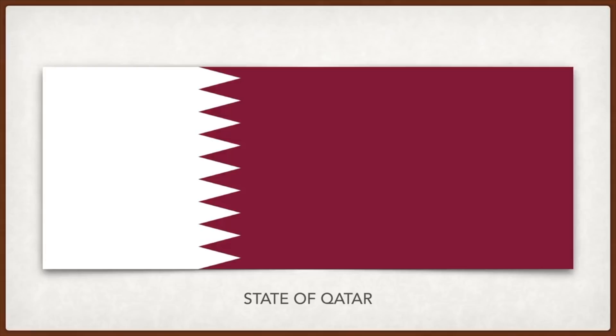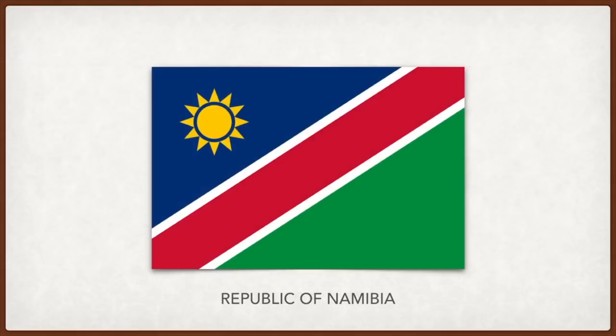Namibia: red is for the heroism of the people and their determination to build a future of equal opportunity, green is for agriculture, blue is for the sky and the Atlantic Ocean which it borders, and white is for peace and unity. Botswana: the black and white stripes represent racial cooperation and equality; the light blue background represents the sky and water, which is a scarce and precious resource in the Kalahari Desert.